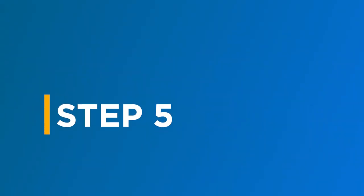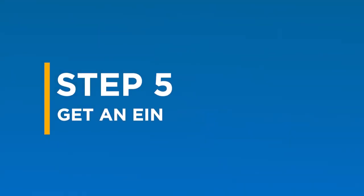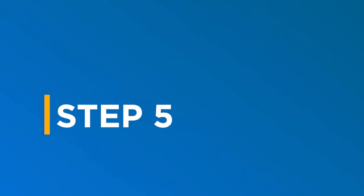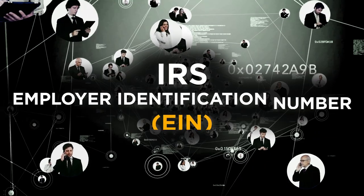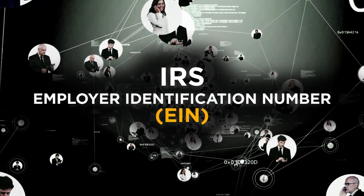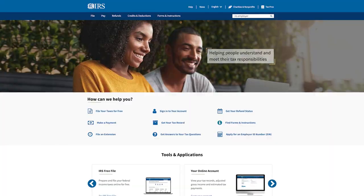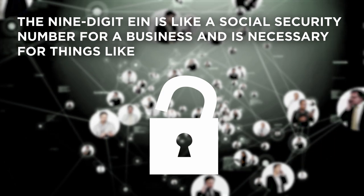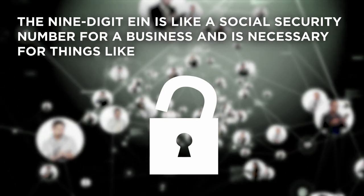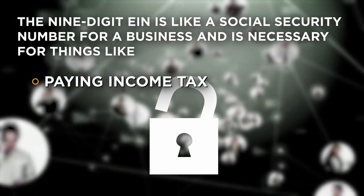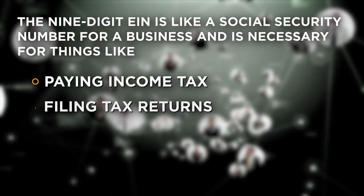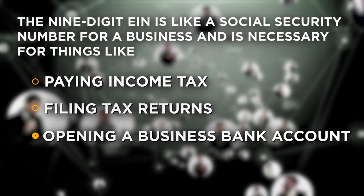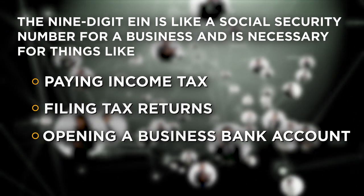Step 5: Get an EIN. Before your company is ready to start doing business, you must obtain an IRS Employer Identification Number by applying on the IRS website. The 9-digit EIN is like a social security number for a business and is necessary for things like paying income tax, filing tax returns, and opening a business bank account. You can apply for an EIN on the IRS website.